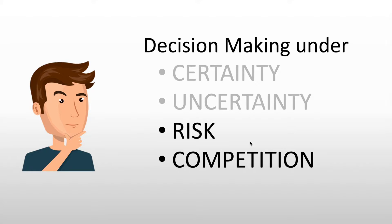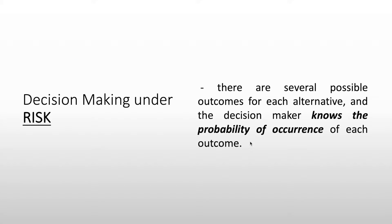So let's start with decision making under risk. Decision making under risk is where there are several possible outcomes for each alternative and the decision maker knows the probability of occurrence for each outcome. This is quite the opposite of decision making under uncertainty, where the decision maker does not know the probability of occurrence for each outcome.